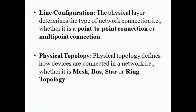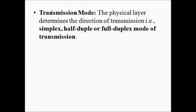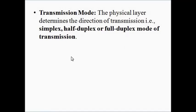The final task of the physical layer is to determine the transmission mode. There are three types: simplex, half duplex, and full duplex. Simplex means only unidirectional communication — one device can only transmit and the other can only receive. In half duplex, both devices can transmit and receive, but not simultaneously — they must do so at different time slots. In full duplex, both devices can transmit and receive simultaneously at any time.